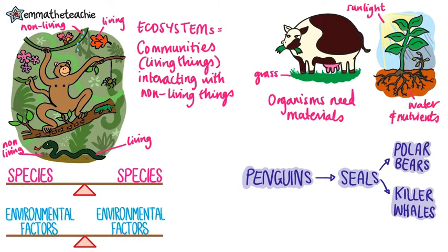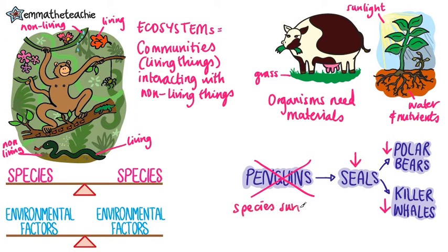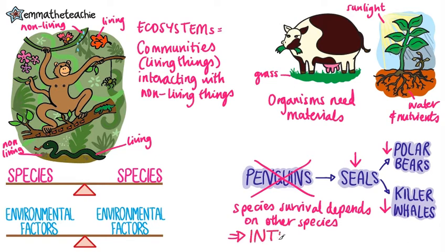If one species is removed, it can affect the entire community. For example, if penguins were removed, then the number of seals would decrease, which in turn would affect the numbers of polar bears and killer whales. We'll look at food chains in more detail in a later video. Because species survival depends on other species, we say that they are interdependent.